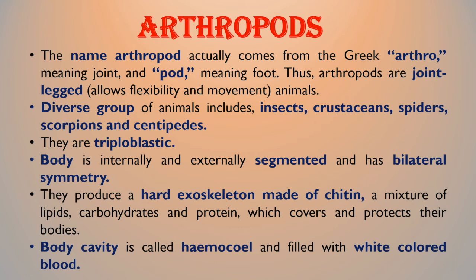These animals are triploblastic. Their body is internally and externally segmented and has bilateral symmetry. They produce a hard exoskeleton made up of chitin, a mixture of lipids, carbohydrates, and proteins, which covers and protects their bodies. Their body cavity is called a hemocoel and is filled with white-colored blood.